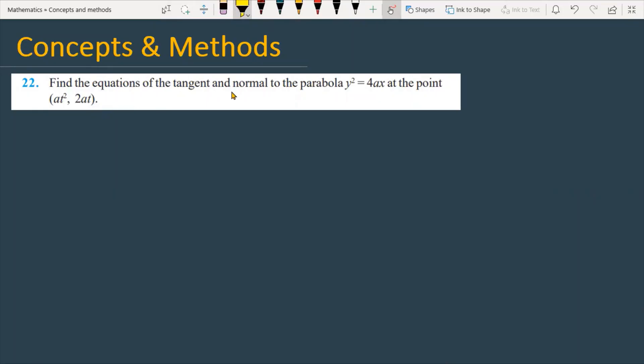Find the equation of the tangent and normal to the parabola y² = 4ax at the point (at², 2at). Let's see how we are going to solve the given problem.